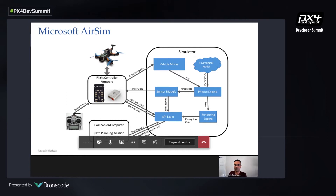To give a quick architectural overview of our simulator: most people attending would already be aware that the simulator takes in control inputs and gives back sensor data. In AirSim, actuator signals can come from various sources — a C++ or Python API, routed through a flight controller in HITL or SITL mode — or even from a manual RC transmitter.